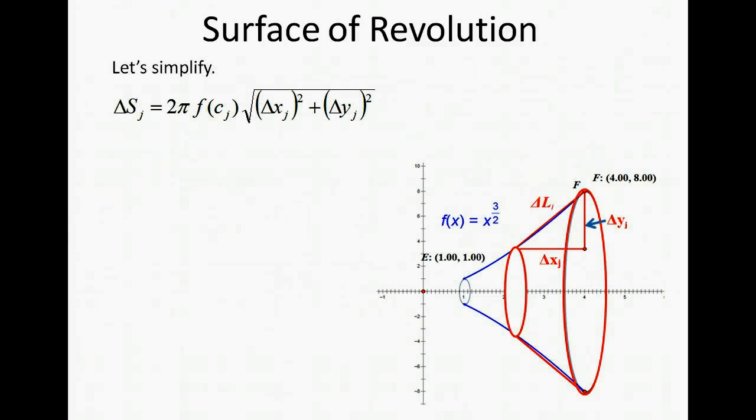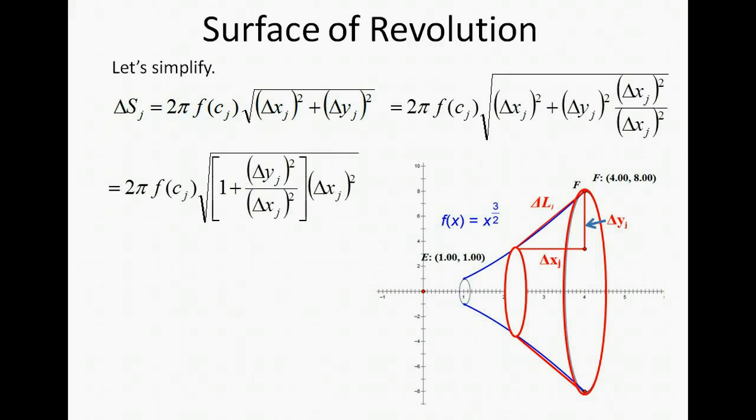Okay so now let's simplify this formula a little bit. I'm going to multiply the Δy² by Δx² over itself. So we're multiplying by 1. And we're going to rearrange some of the terms.